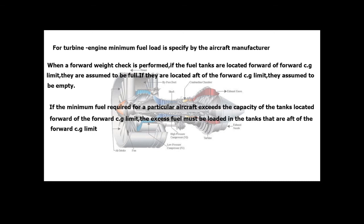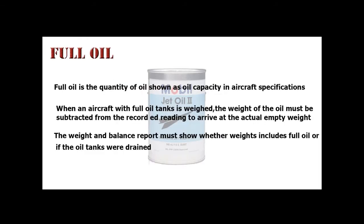When the forward weight check is performed, if the fuel tanks are located forward of the forward CG limit, they are assumed to be full; if they are located aft of the forward CG limit, they are assumed to be empty. If the minimum fuel required for a particular aircraft exceeds the capacity of the tanks located forward of the forward CG limit, the excess fuel must be loaded in the tanks that are aft of the forward CG limit.